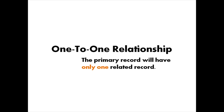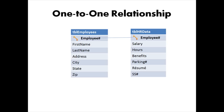Now in Access, there are several kinds of relationships that can be created. The one-to-one relationship is a relationship where the primary record will have only one related record. In this example, we've split employee information into two separate tables and joined that information by the employee number. In both tables, that employee number is designated as the primary key, which means we won't be allowed to duplicate an employee number in either table — we don't want two different employees with the same employee number, hence the name one-to-one.